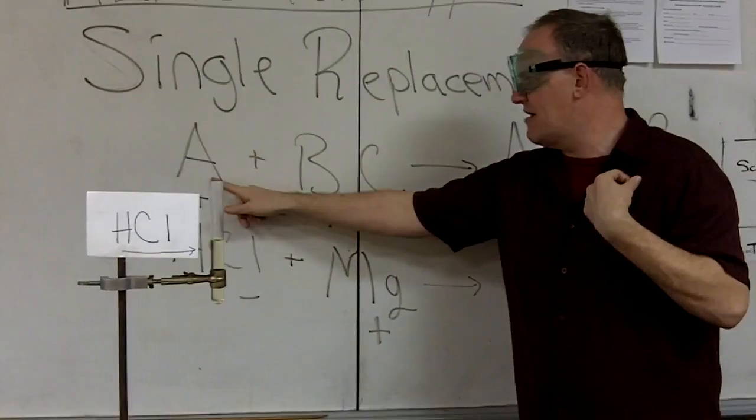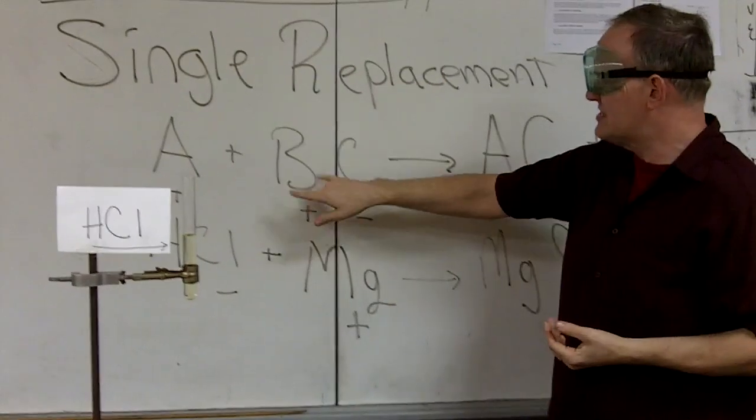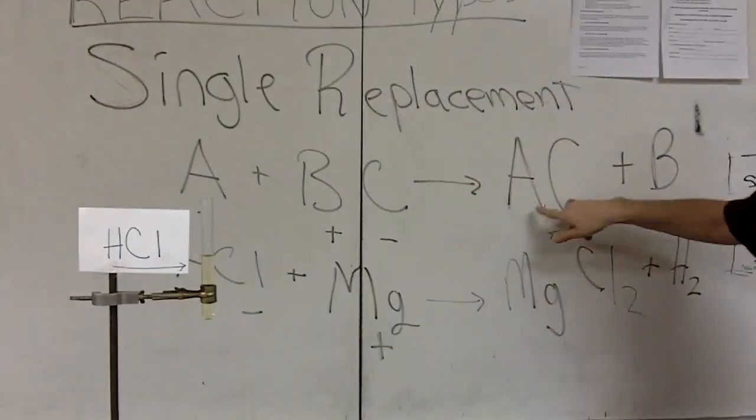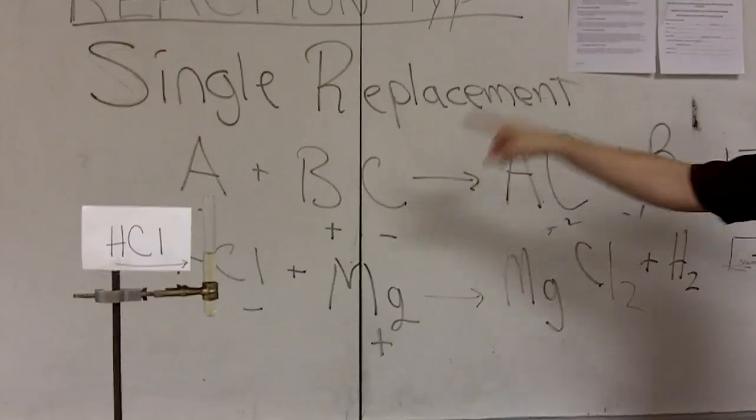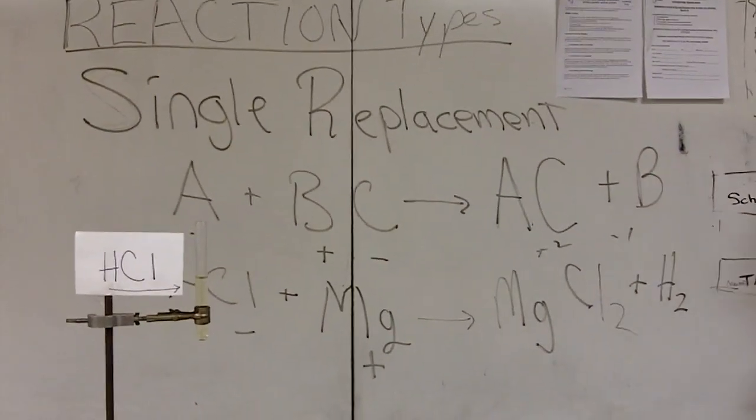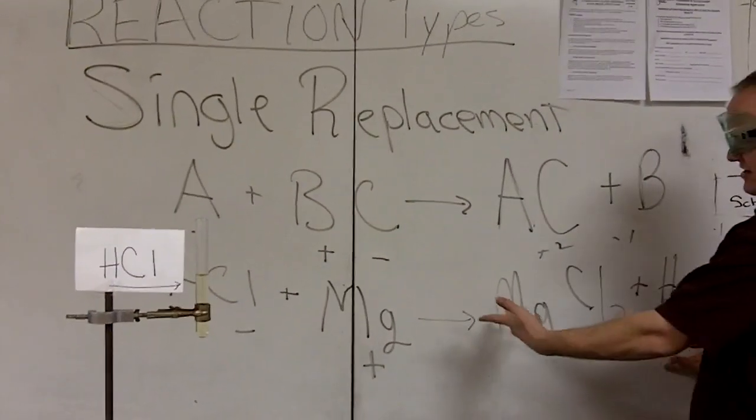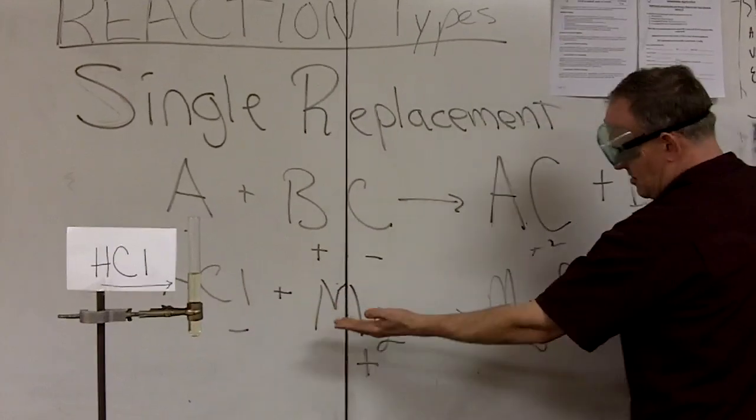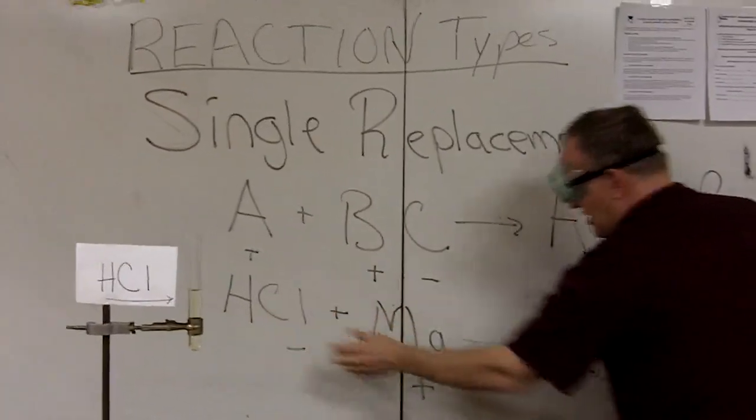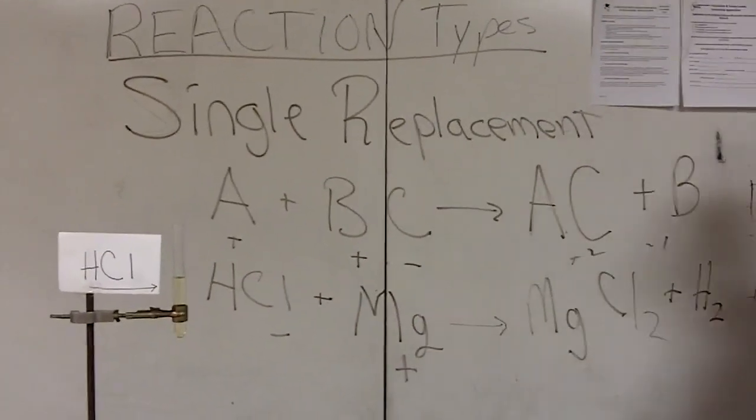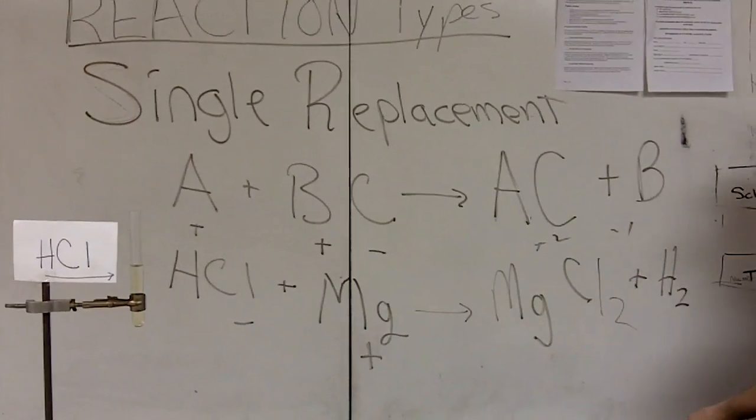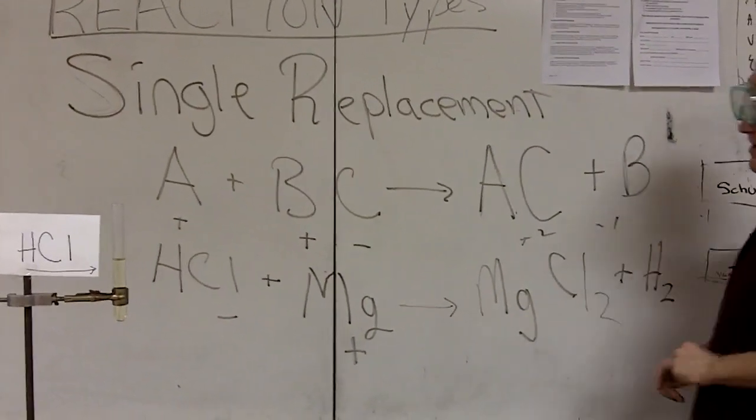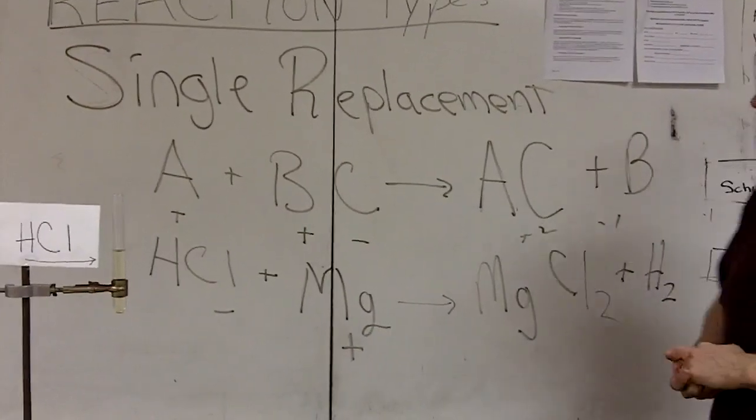And so that's one example of one type of reaction, a single replacement where you have an element displacing, replacing one of the parts of a compound, creating a new compound, and then that part gets left off all by itself as we did here. HCl, the H in the HCl was replaced by the magnesium, making MgCl2 and giving hydrogen off by itself. That's the end of this lesson.